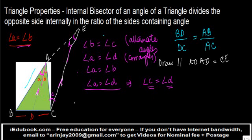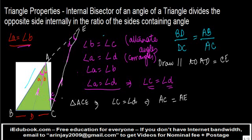Now, if you look at triangle ACE, we have angle c equal to angle d. And what we also have is that AC should be equal to AE. Why? Because sides opposite to equal angles in a triangle are equal. AE is opposite to angle c, and AC is opposite to angle d.